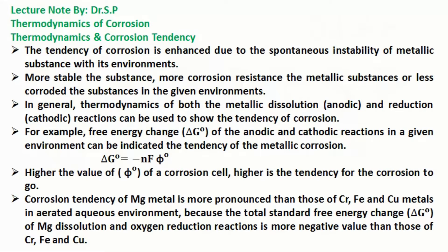The tendency of metallic corrosion: higher the value of potential of a corrosion cell, higher is the tendency for the corrosion to go. Corrosion tendency of magnesium metal is more pronounced than those of chromium, iron, and copper metals.